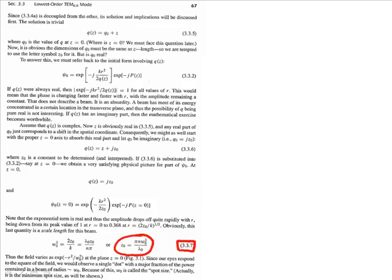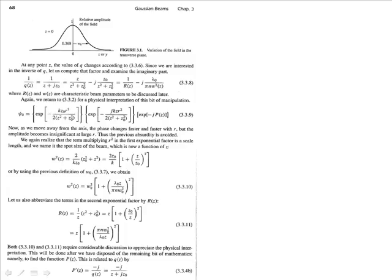And notice you can write z-naught in terms of w-naught, which is the size of the beam, and lambda-naught, which is the wavelength, or you can write w-naught in terms of lambda-naught and z-naught. They're essentially identical equations. And we're going to see what this w-naught means in just a little bit.